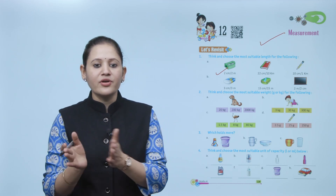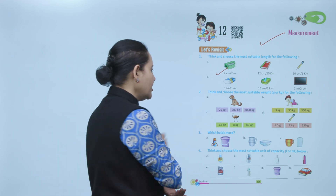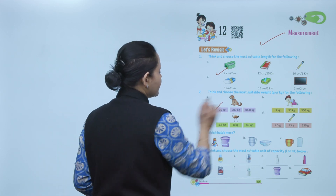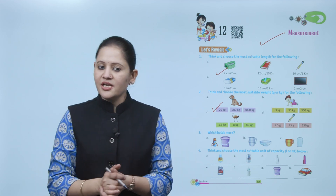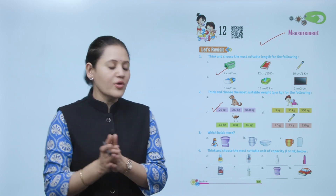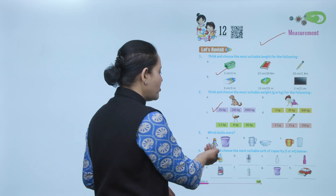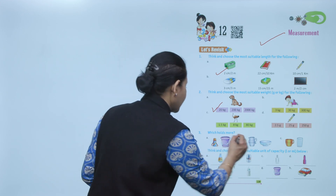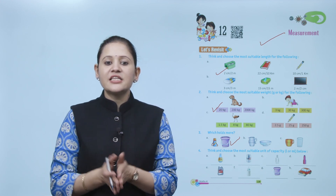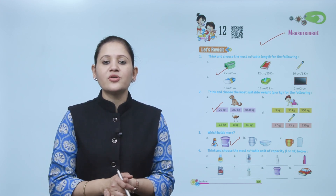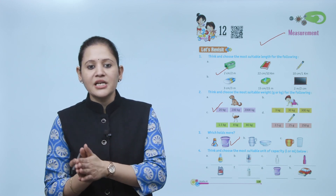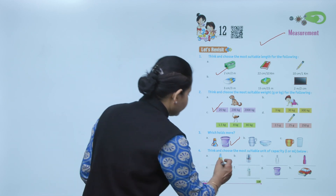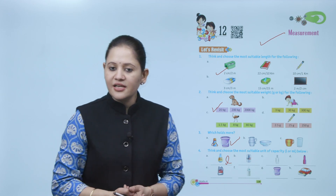Next, think and choose the most suitable weight — gram or kilogram — for the following. Here the dog: it could be 20 kg, so that is the correct option. Which holds more, a water bottle or a bucket? Obviously a bucket, so bucket is the correct option. Next, choose the most suitable unit of capacity — liter or milliliter. Here the oil: liter is correct.